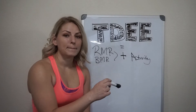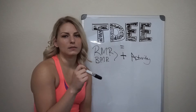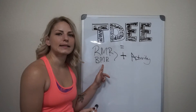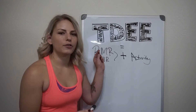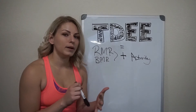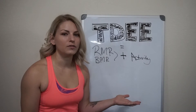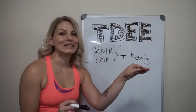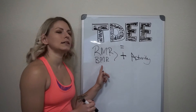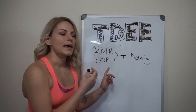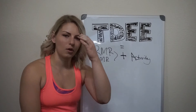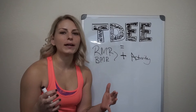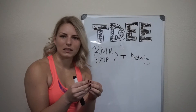RMR stands for Resting Metabolic Rate; BMR is Basal Metabolic Rate. What this number is is how many calories your body needs to survive. If you stayed in bed all weekend and just marathoned Luke Cage on Netflix and just laid there for 24 hours straight — that's what your RMR is, and it's going to be determined off of a few different equations.